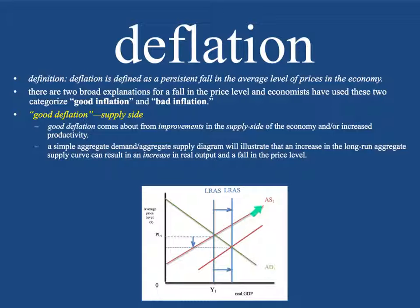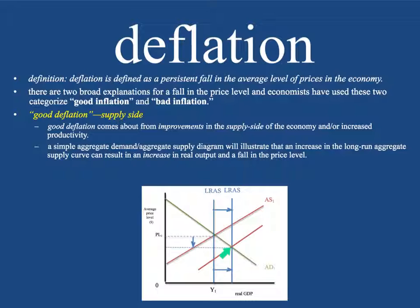Looking at this from a neoclassical view of aggregate supply and aggregate demand: we have a long-run aggregate supply curve, a short-run aggregate supply curve AS1, and the aggregate demand curve. When we're talking about good deflation, we're talking about an improvement — the long-run aggregate supply curve shifts outward, which results in a lower price level. The short-run aggregate supply curve shifts out as well, giving a new equilibrium where the price level is lower but more things are being produced. Unemployment is down, more workers are needed, so this is good for the economy.